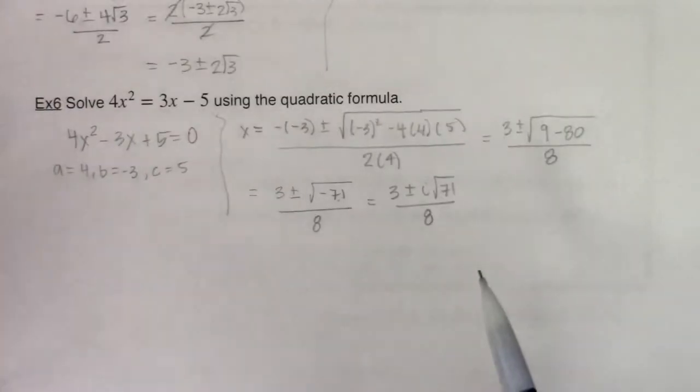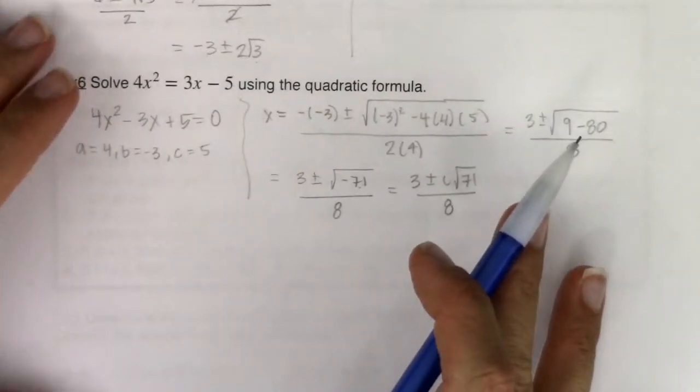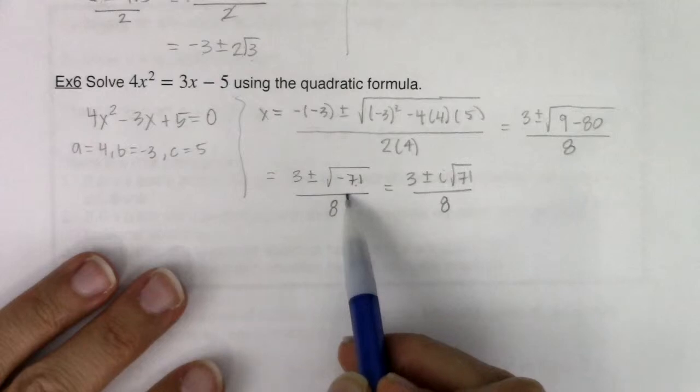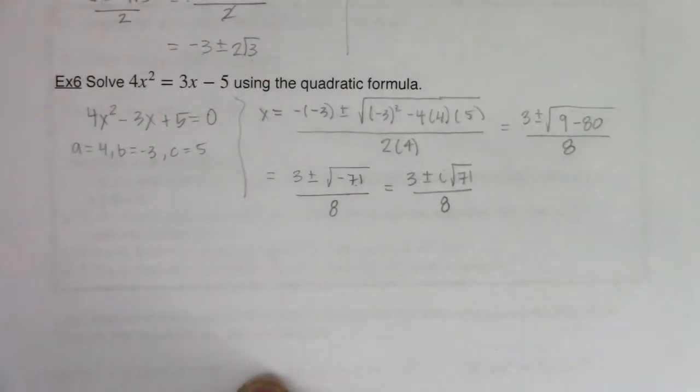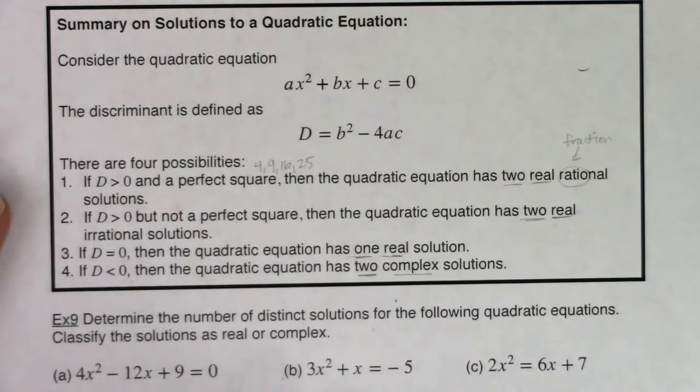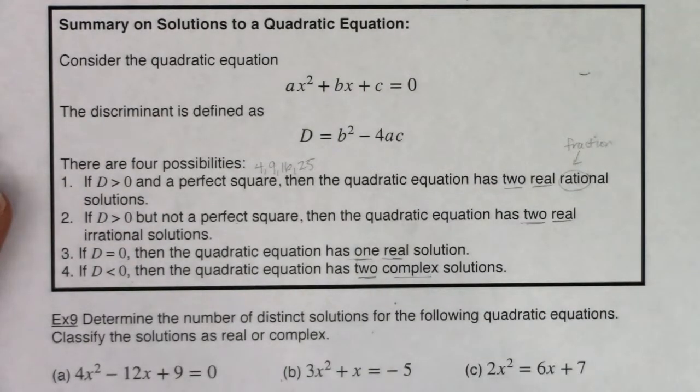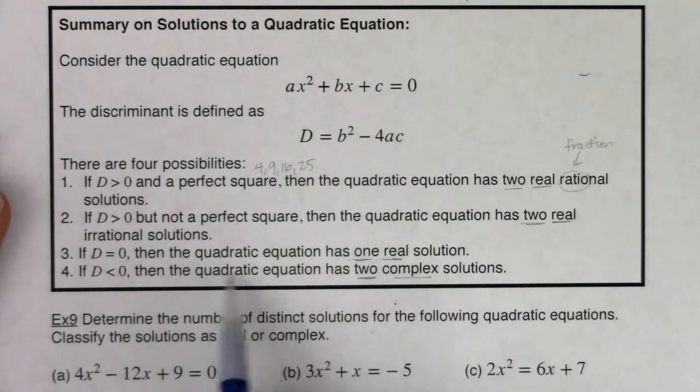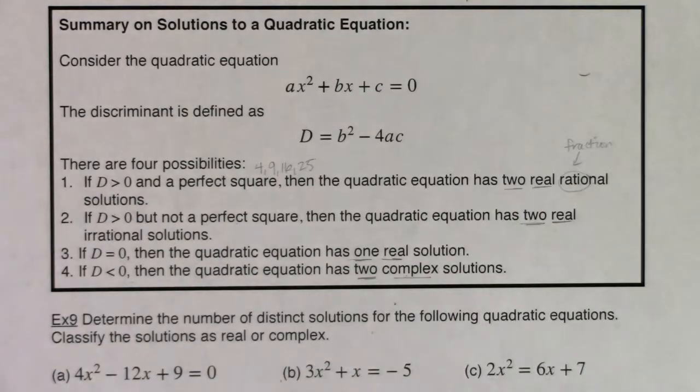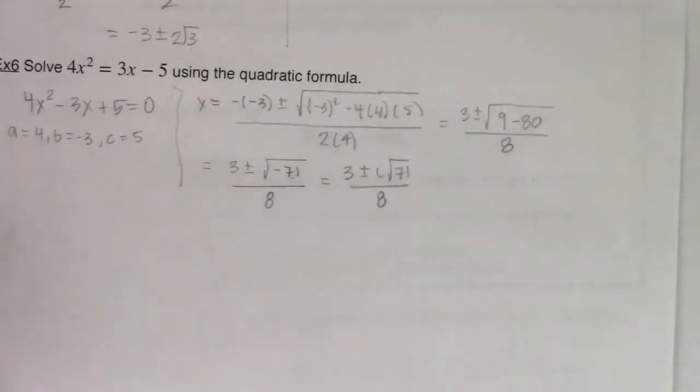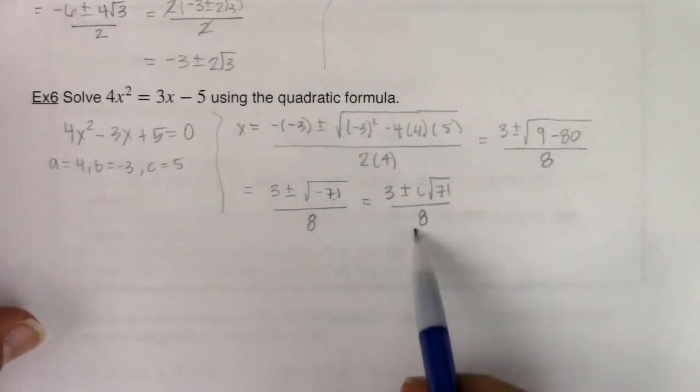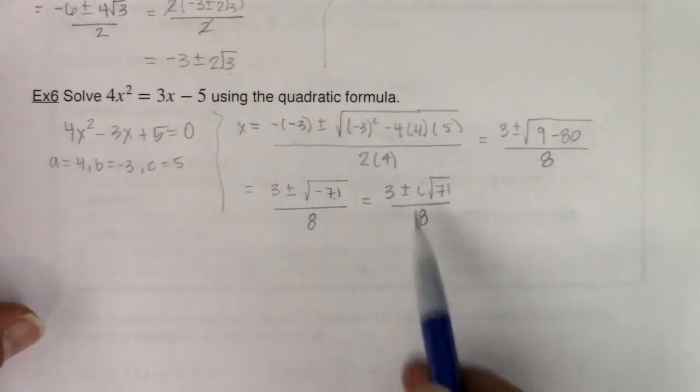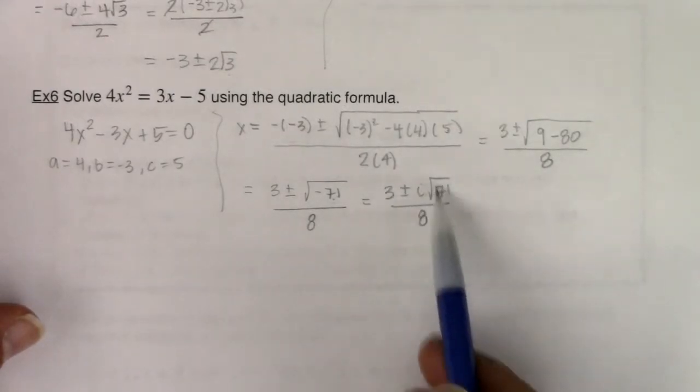I want us to take a look at example 6. When we did example 6, we had a negative discriminant. When my discriminant is negative, we're in option four - the quadratic equation had two complex solutions. I did have two complex solutions: 3 plus i root 71 over 8, and 3 minus i root 71 over 8. Those are two complex numbers with the form a plus bi.